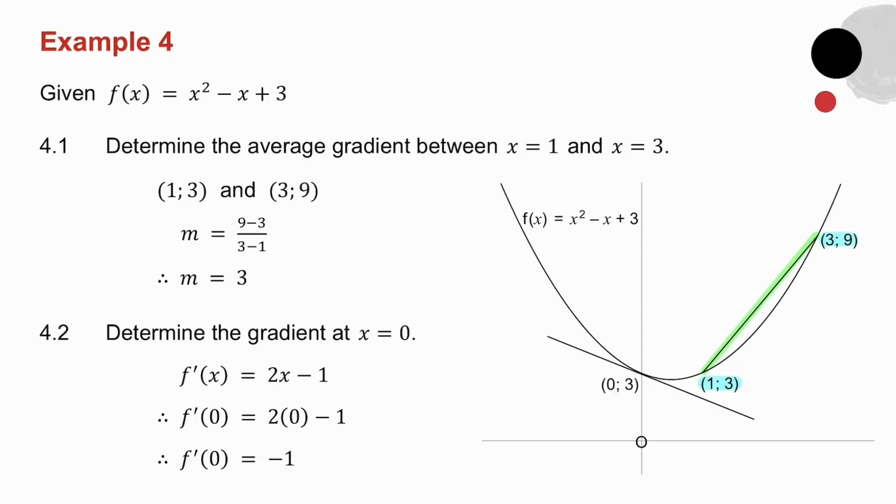So how do I find the average gradient? I use the formula gradient equals y1 minus y2 over x1 minus x2. And I substitute these two points into the gradient formula, and I get a gradient of 3. Now that means that the gradient of the line joining those two points is 3.